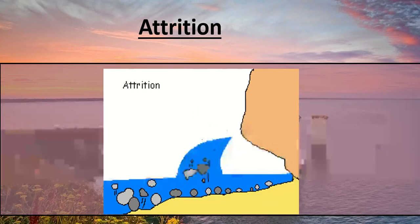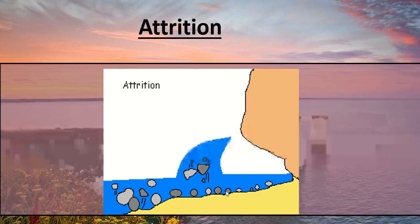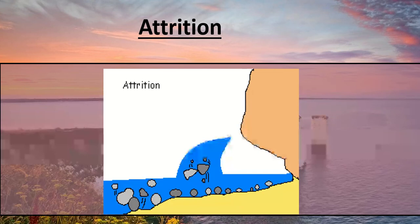The third one is attrition. This is the rocks themselves banging into each other as the wave moves forwards and backwards over and over. The rocks are breaking little chunks off, eventually becoming smaller and rounder. So the two key words I want you to get from attrition are that the fragments of rock become smaller and rounder.